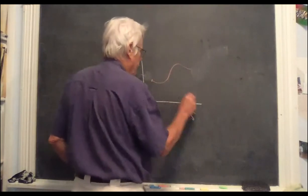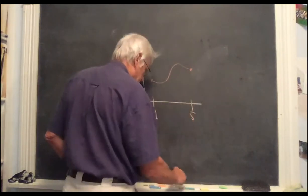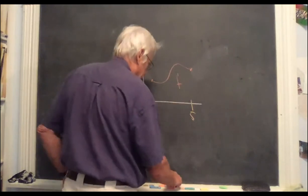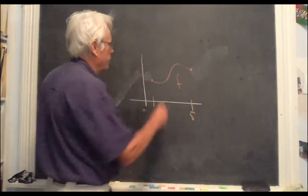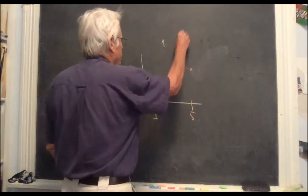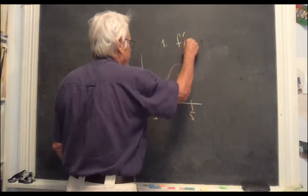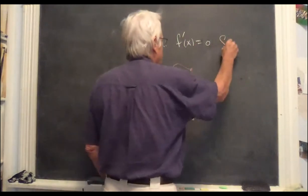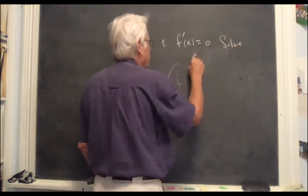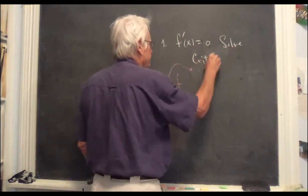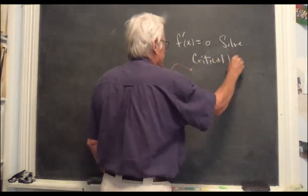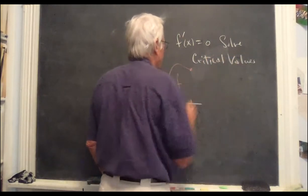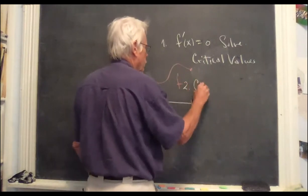How do you find the maxes and minimums of this function, say f? And the algorithm has two parts. You take the derivative, set it equal to zero and solve. This gives you the critical values. And secondly, you check the boundary